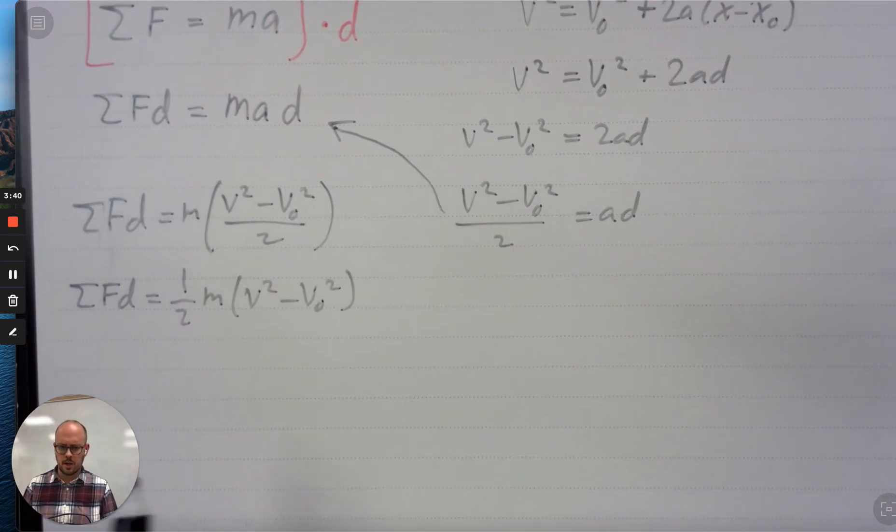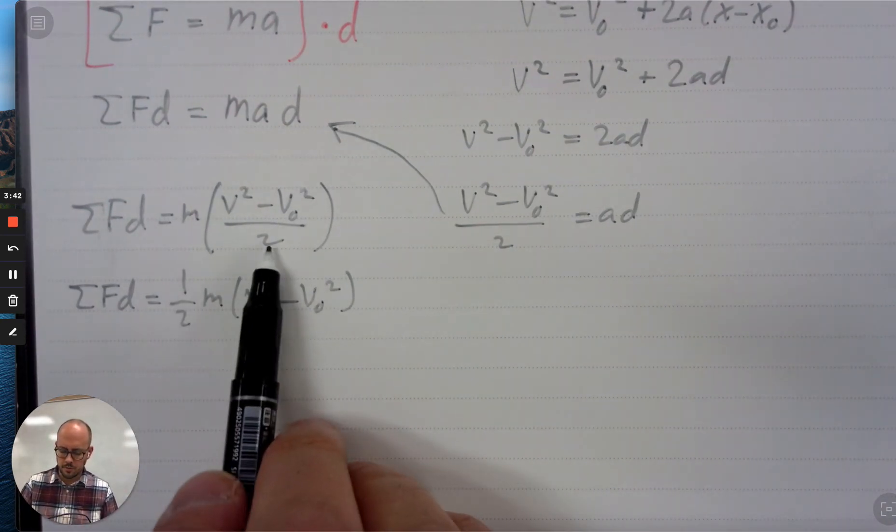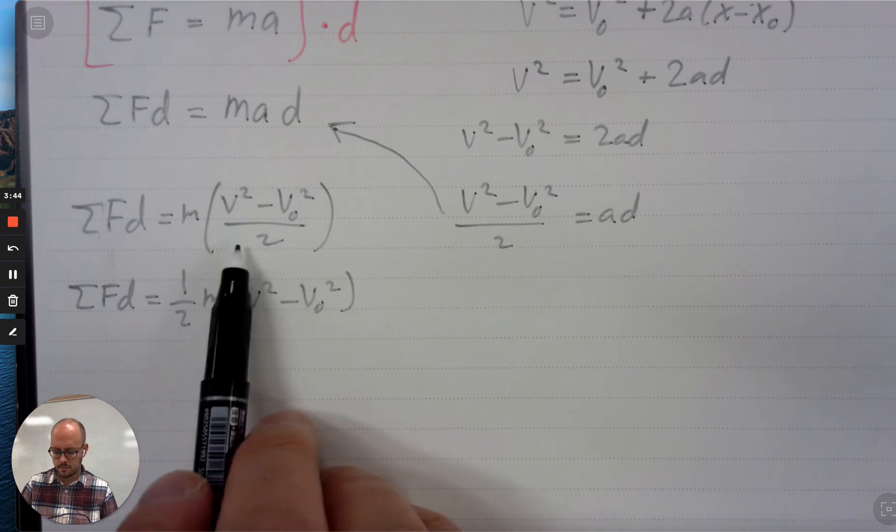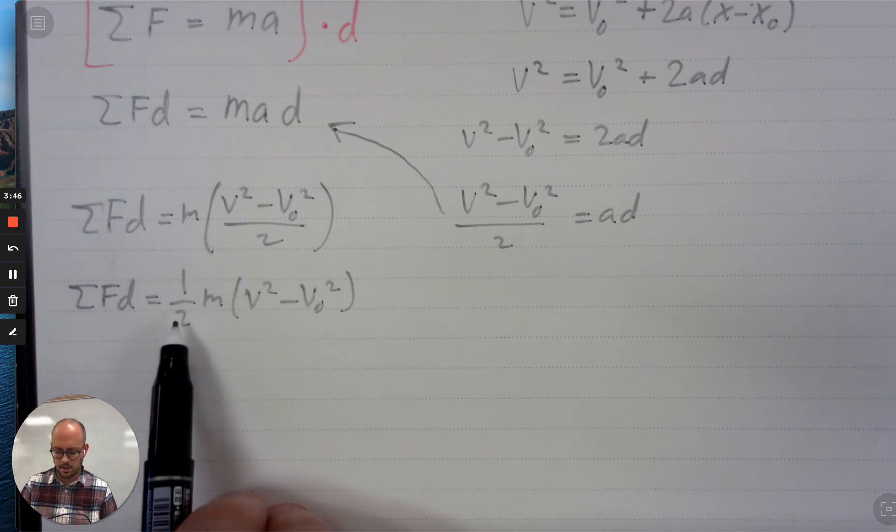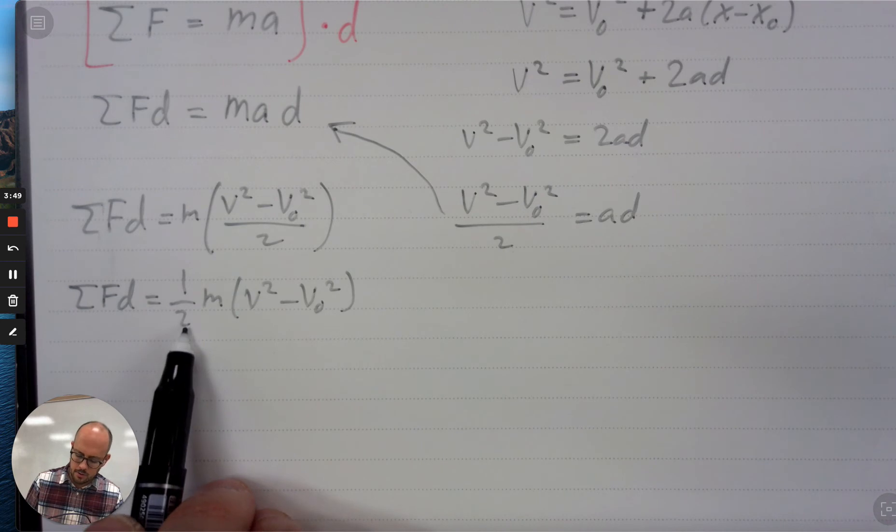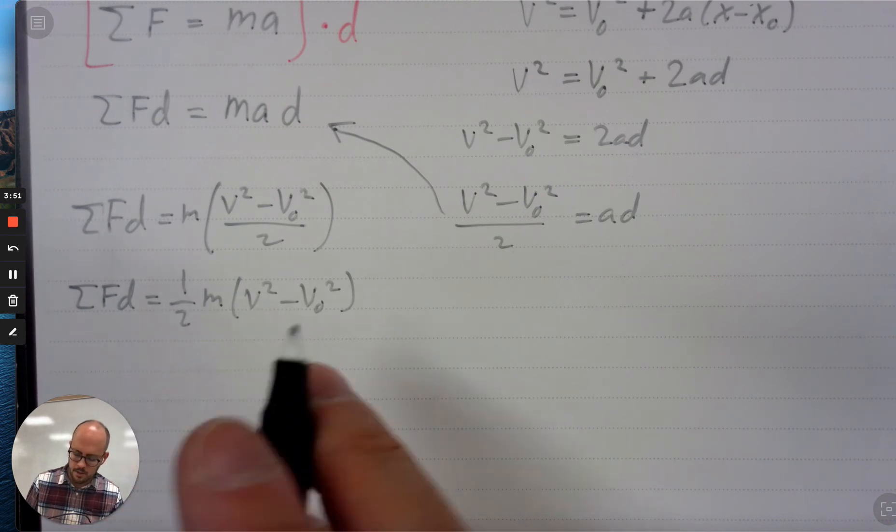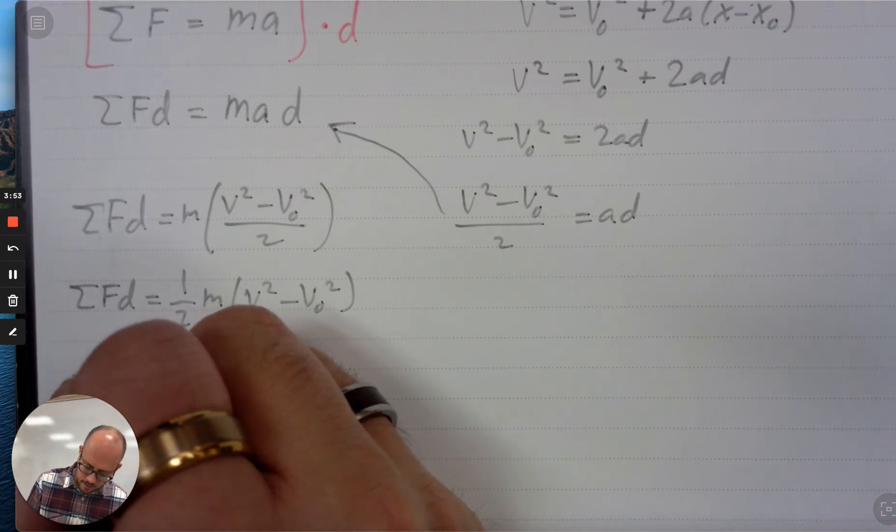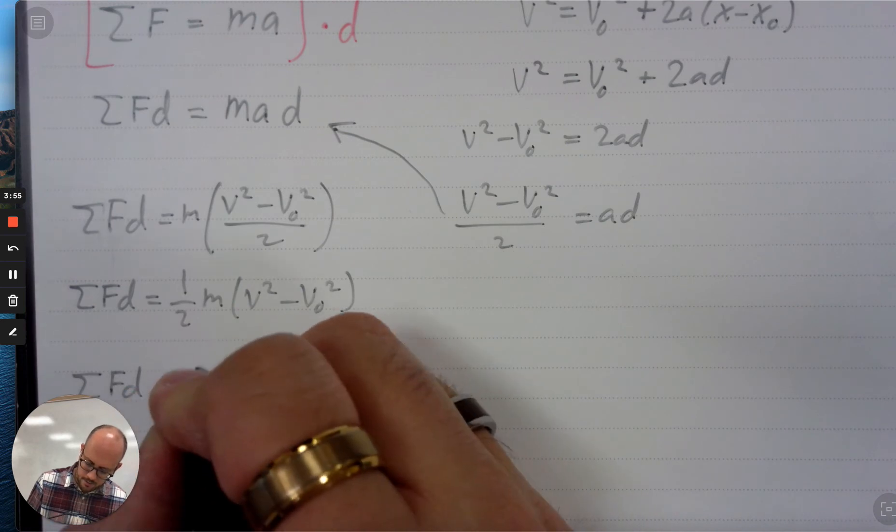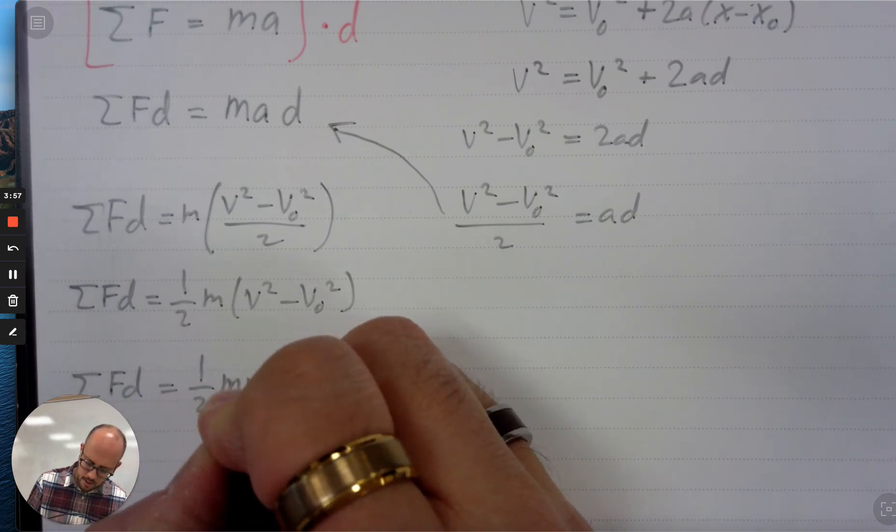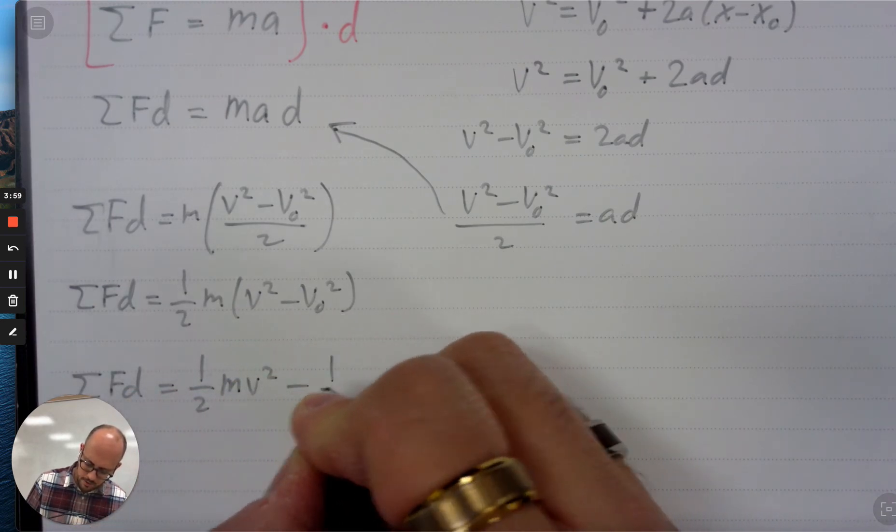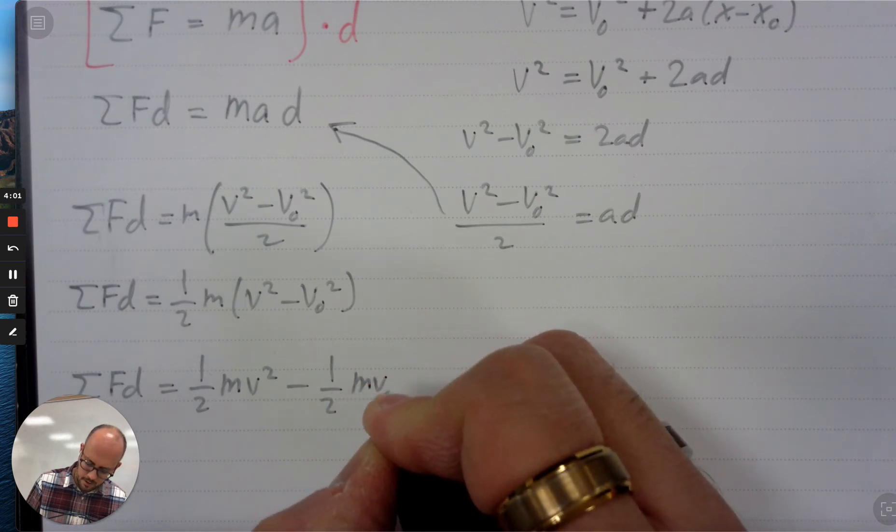Let me try this in multiple steps. So fd equals one half m times v squared minus v naught squared. So now it's probably going to make a little bit more sense. I just move the two out to the front. I can now distribute the one half m inside the parentheses and I get net force times displacement equals one half m v squared minus one half m v naught squared.